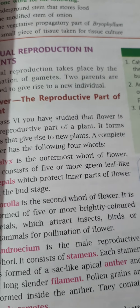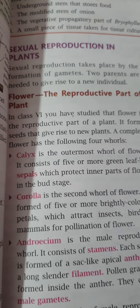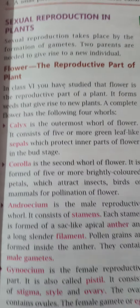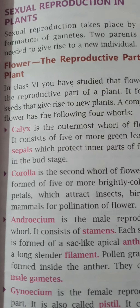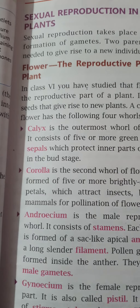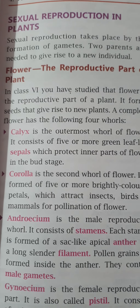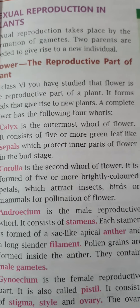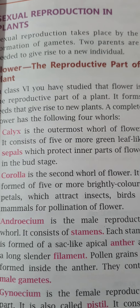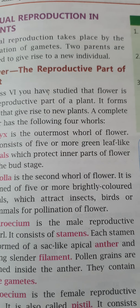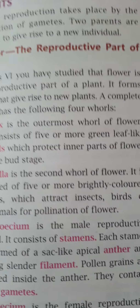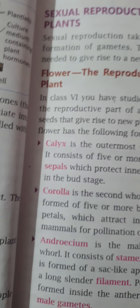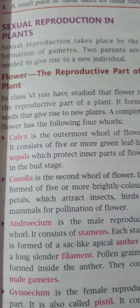In Class 6 you studied that a flower is the reproductive part of a plant — it forms seeds that give rise to a new plant. A complete flower has the following four whorls, which are the main reproductive organs: calyx, corolla, androecium, and gynoecium. Now we are going to study all these in a brief manner, starting with the first whorl, calyx.